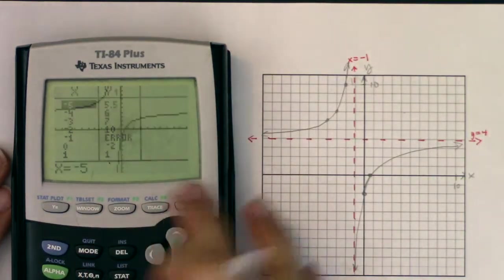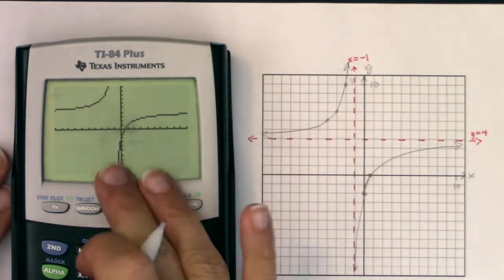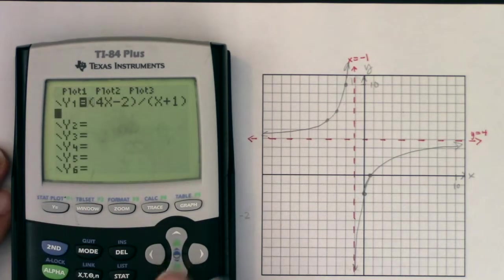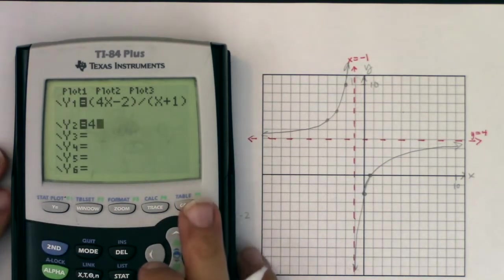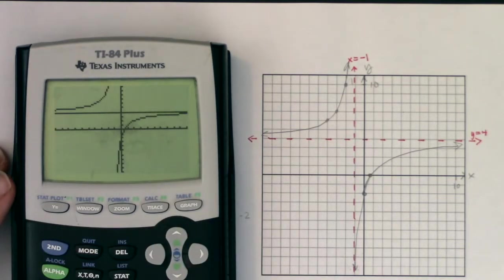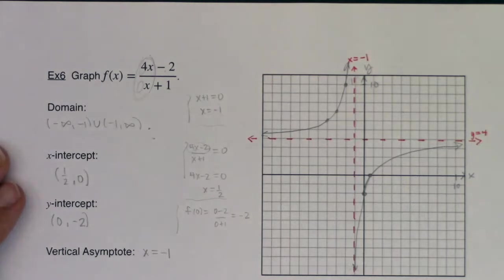Alright, so the graph on my paper is looking a lot like the graph on my calculator. If you want, you have the option. You could type in the horizontal asymptote, and you'll see it cuts your graph, right? Okay, so I only have one more trait. I need to address the range. So let me scooch this up.